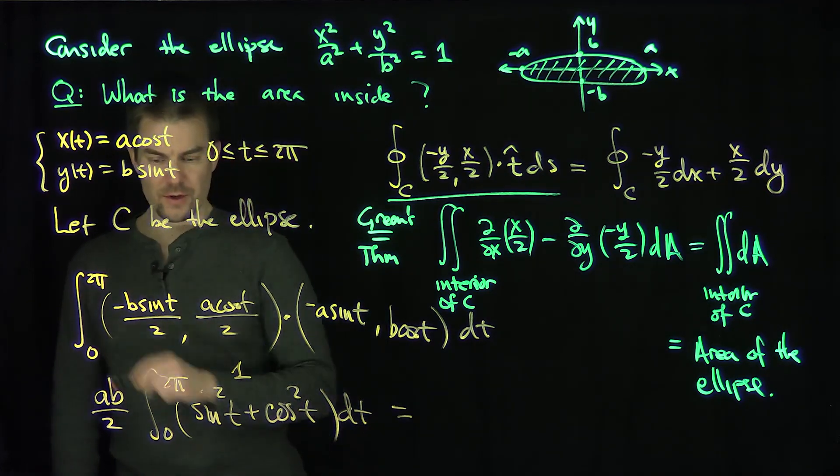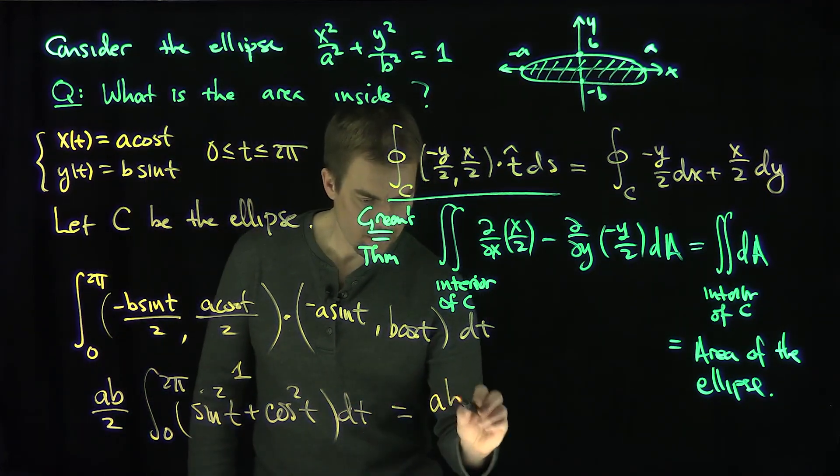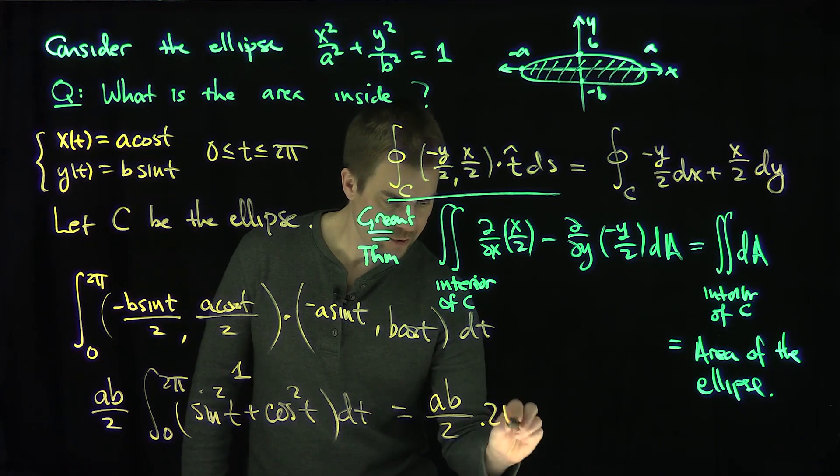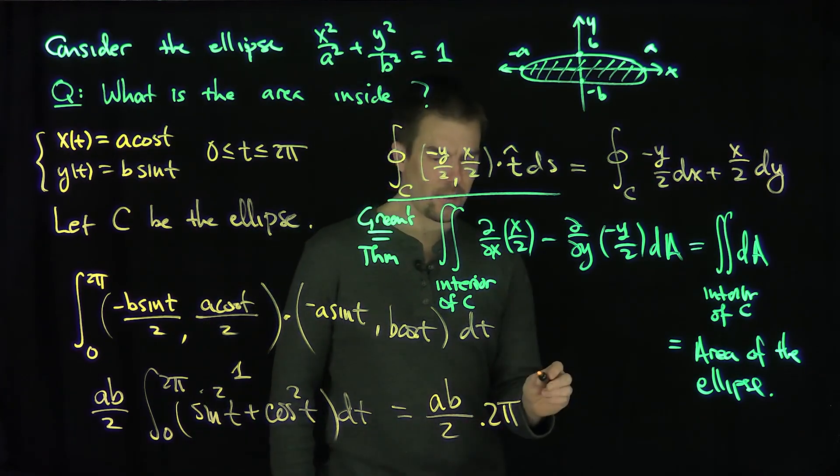That, of course, is just 1. So that gives me ab over 2 times 2 pi. The 2's cancel out, and we see that this is pi times ab.